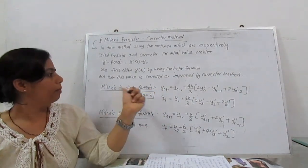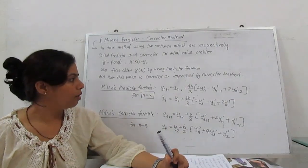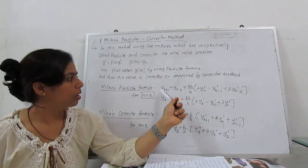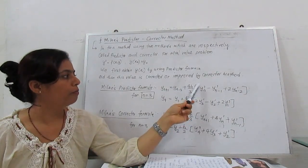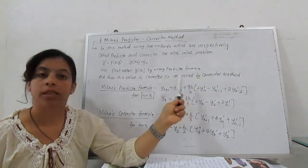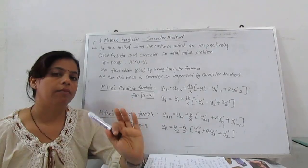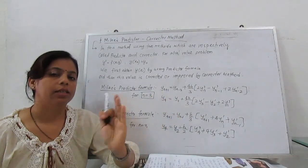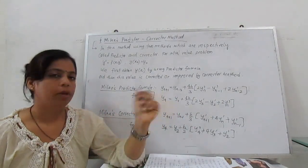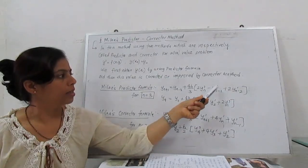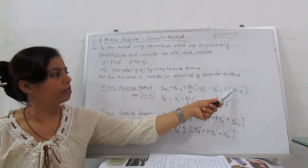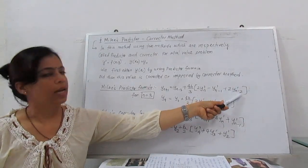The Milne predictor formula is given by this equation: yₙ₊₁ = yₙ₋₃ + (4h/3)[2y'ₙ - y'ₙ₋₁ + 2y'ₙ₋₂], where h is the fixed interval between equidistant points x.